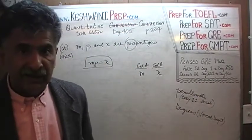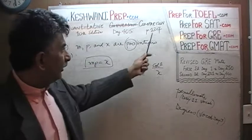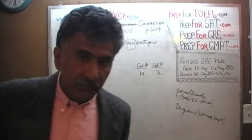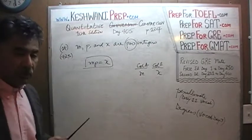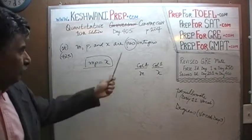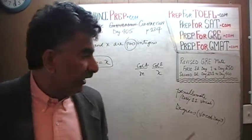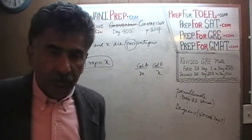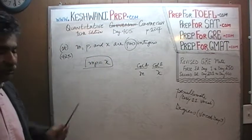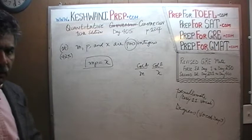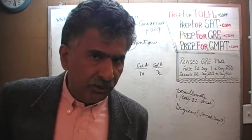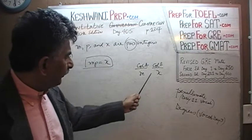We are about to do the second last problem on page number 124. The penultimate problem on the page. Here is what we are told: we have three quantities — m, p, and x — and we are told that all three of them are positive integers. They have to be positive and whole numbers. Furthermore, we are told that m times p equals x. The question is very simple: all we are being asked to compare is the quantity m versus x.